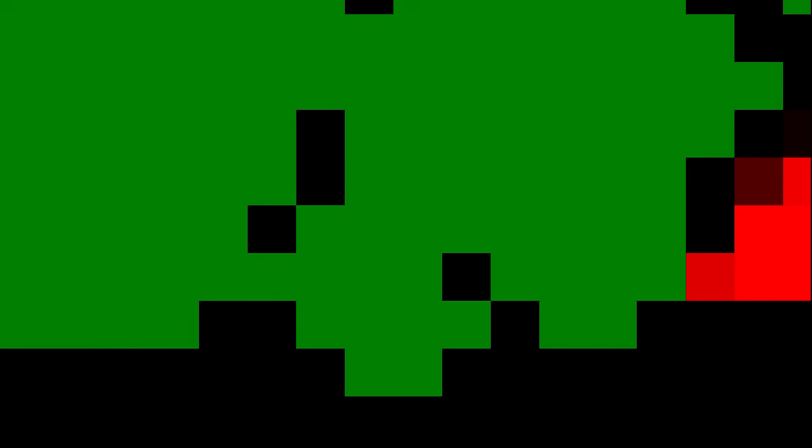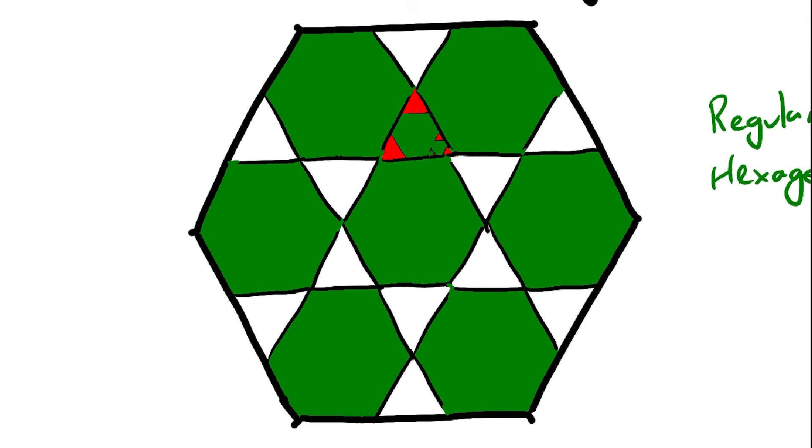This might seem like a dead end, but you can just repeat this process infinitely and do this for every equilateral triangle that pops up, until there's no red area left. So yes, you can cut a regular hexagon into smaller copies of itself, it just takes infinitely many cuts.